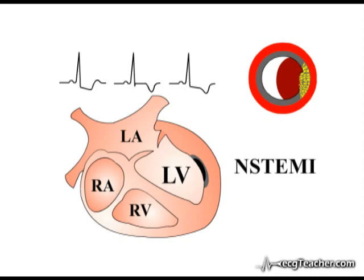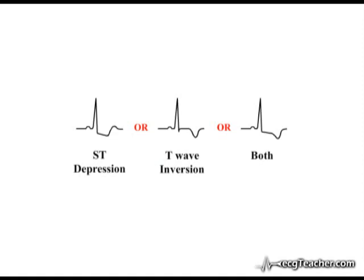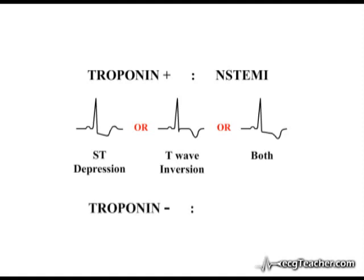This is a non-ST elevation MI. As the ECG changes of unstable angina and non-ST elevation MI are identical, the two entities cannot be distinguished based purely on ECG analysis — you need a second test. As myocardial muscle dies, it releases cardiac markers such as cardiac troponin into the bloodstream. If the patient develops elevated levels of cardiac markers in association with the ECG changes described, they are said to have had a non-ST elevation MI. If blood levels remain normal, they have pure ischemia — unstable angina. Unstable angina and non-ST elevation MI are grouped together under the general term non-ST elevation acute coronary syndromes.